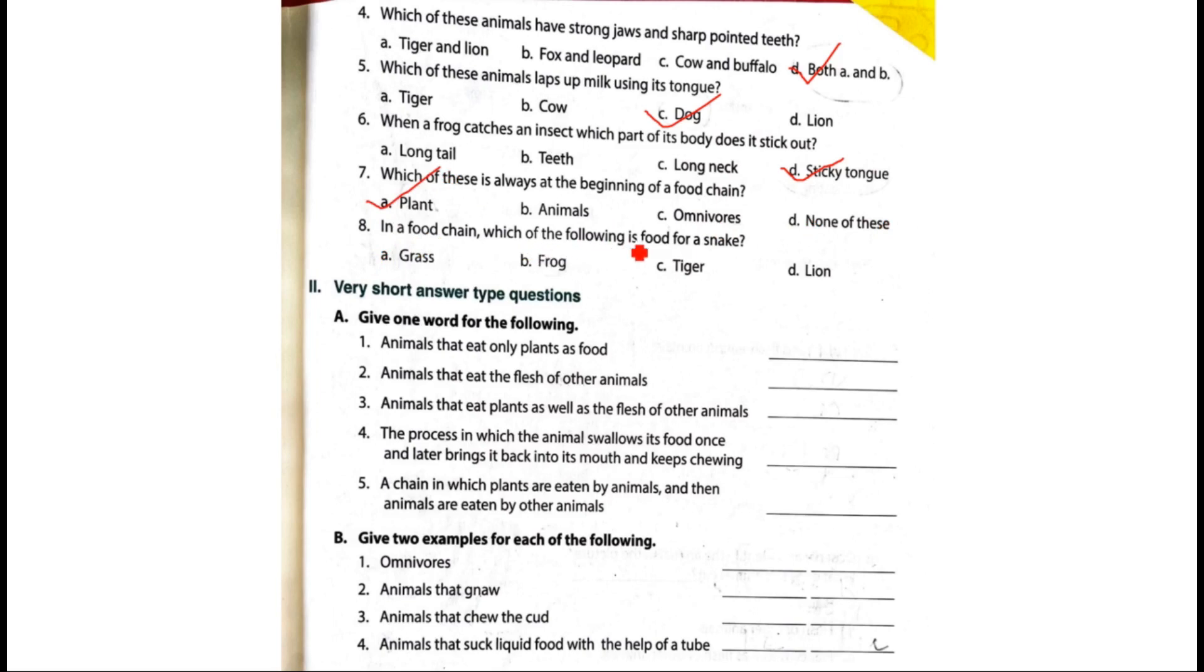In a food chain, which of the following is food for a snake? Grass, frog, tiger or lion? The answer is frog.